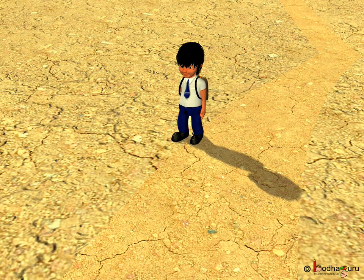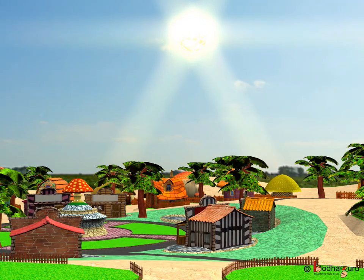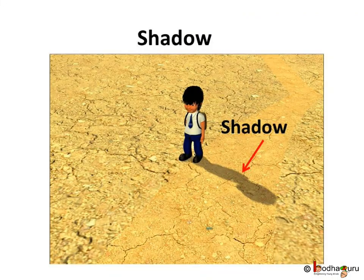Here, the boy is walking in the sunlight. What do we see here? Here we see a dark patch on the side of the object. This dark patch is called the shadow of that object. How was the shadow formed? When the path of light was obstructed, then an area of darkness was created on the side of the object away from the light. This is shadow.